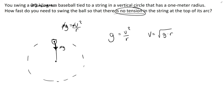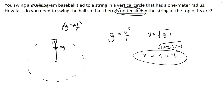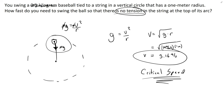You'll notice that √(gr) appears constantly in circular motion problems. For a banked curve it's √(gr·tanθ); for a vertical circle it's √(gr). So every time you see uniform circular motion, think 'gr.' For our problem, v = √(10 × 1) = 3.16 m/s. This is called the critical speed — the minimum speed needed so that at the top of the path, only weight acts as centripetal force with no tension pulling you down.